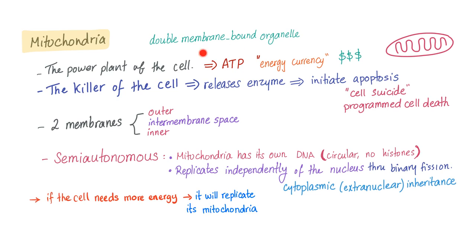Mitochondria forms ATP, and also it's the killer of the cell. It releases enzymes to initiate apoptosis, also known as programmed cell death or cell suicide. This is different from cell homicide, which is necrosis. Necrosis is evil.